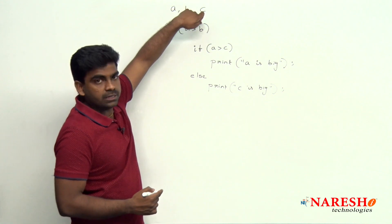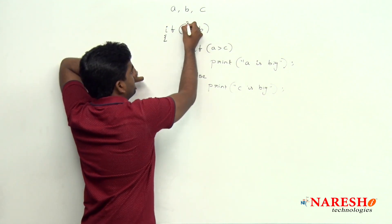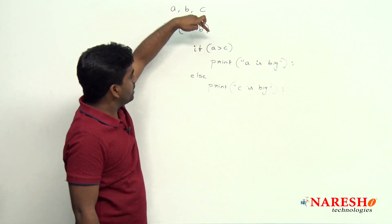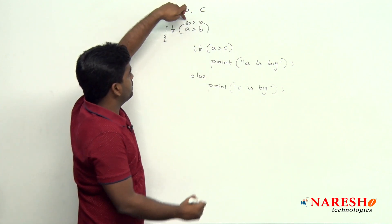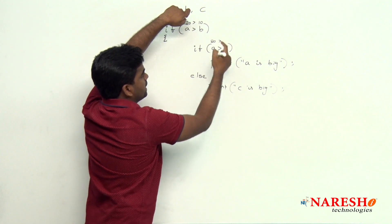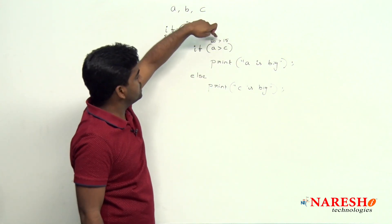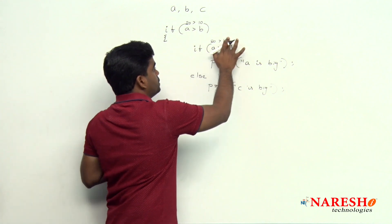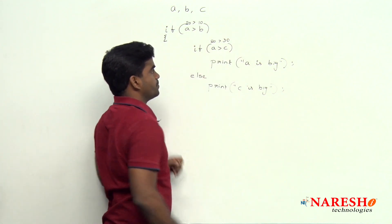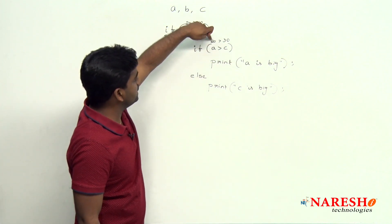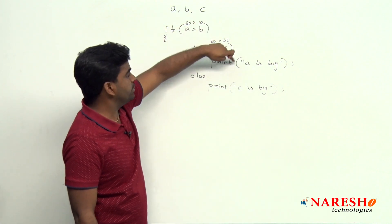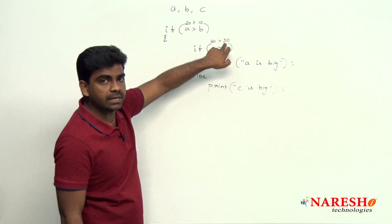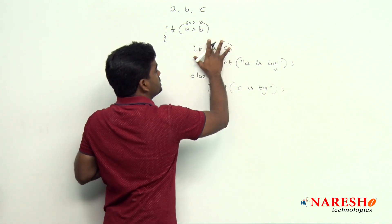Whenever we are checking a is greater than b, yes, a is greater than b, with some examples I will explain. 20 is greater than 10, condition true. And next suppose we are checking a value, already 20 we took. Suppose c value is 15, 20 is greater than 15, condition true, then a is big will display. Suppose if c value is 30, 20 is greater than 30, condition false, it will terminate, control will execute else block. In that else block, c is big, look at the value of c, 30, 30 is big. So this is the way we are writing.